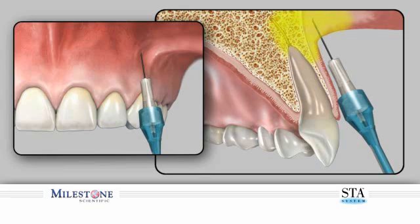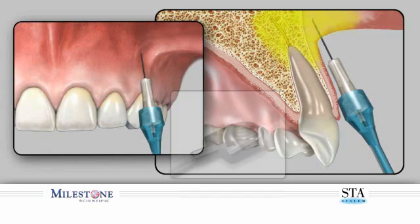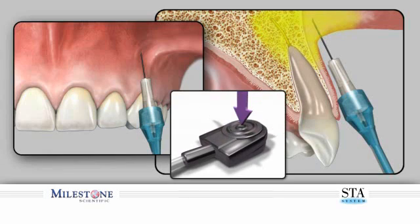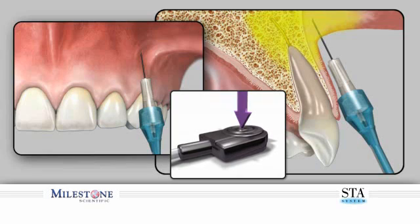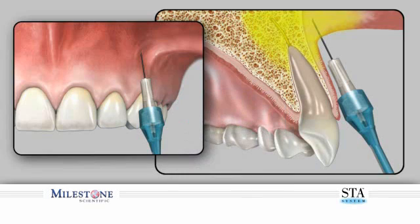Once you have achieved the negative aspiration, it is recommended that you administer at least one quarter of the cartridge at the control flow rate before transitioning to the rapid flow rate. To enter into the rapid flow rate, depress the foot control pedal beyond the halfway down position. This will allow you to enter into the second, more rapid flow rate, in which you can administer the remaining amount of anesthetic solution.